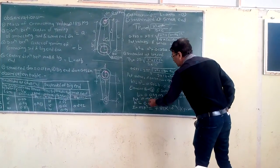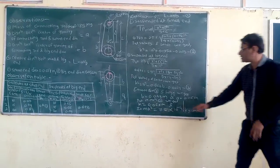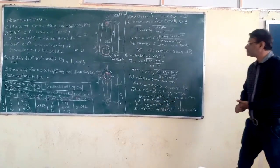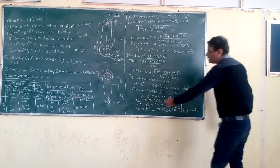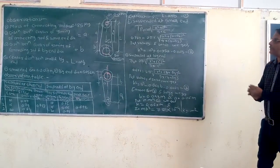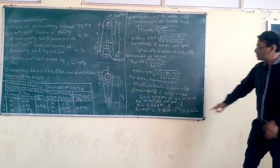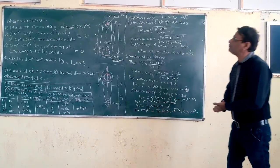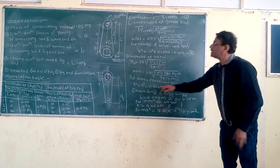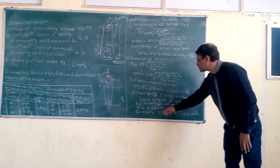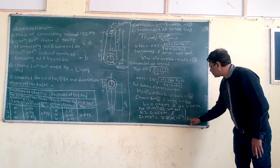Putting these values into equation 2, we get the radius of gyration K as 0.065 meter. The formula for mass moment of inertia is I equals mK². So I equals 0.185 into (0.065)², giving a total mass moment of inertia of 7.81 × 10⁻⁴ kg·m². Thank you very much.